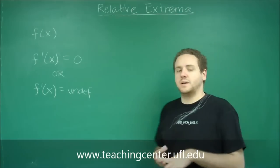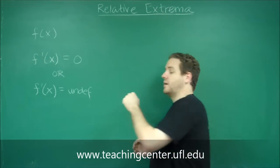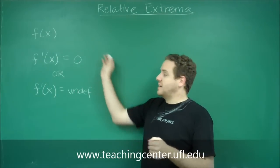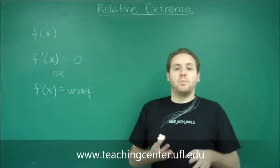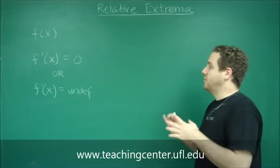But remember that these numbers have to be in the domain of your function. So for example, a function that has a vertical asymptote - at the point where it has its vertical asymptote its derivative is undefined, however that does not count towards this because that point was a vertical asymptote and not in the domain of your function.